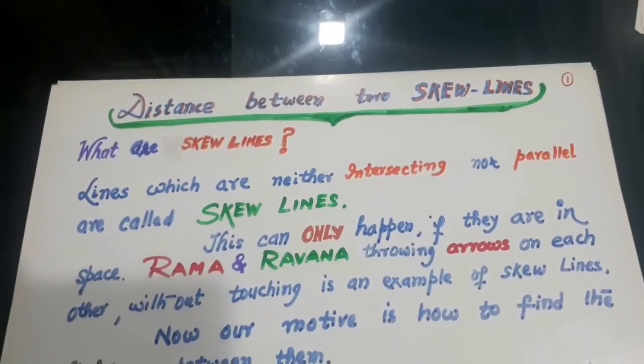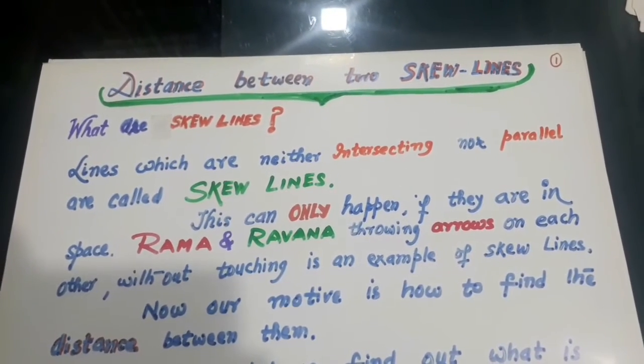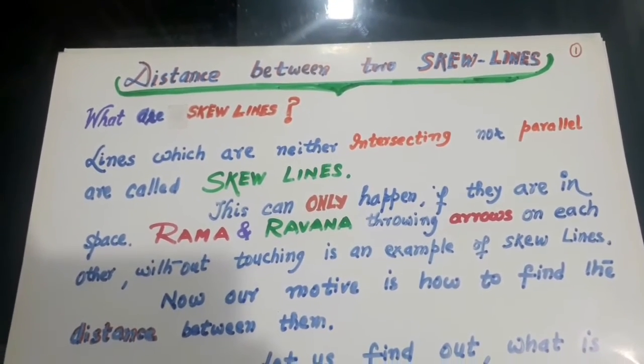What are skew lines? These are lines which are neither intersecting nor parallel. They are called skew lines.